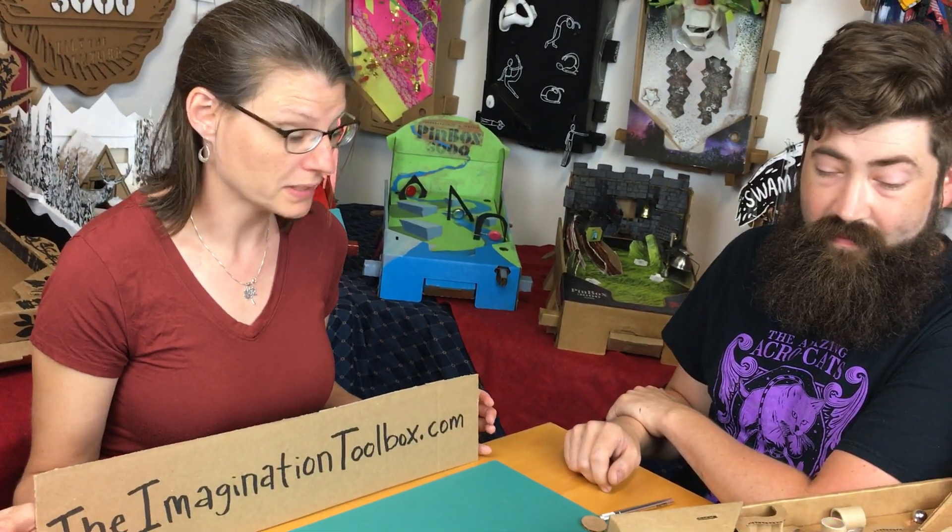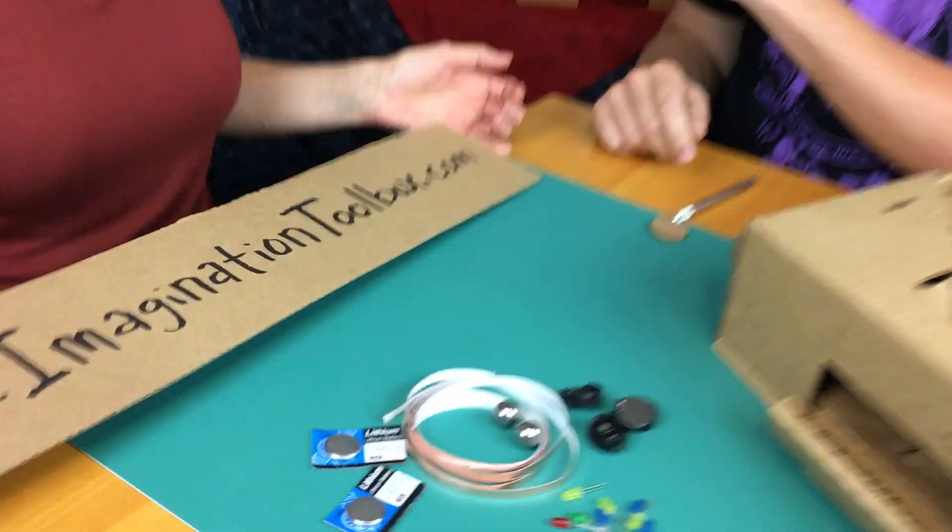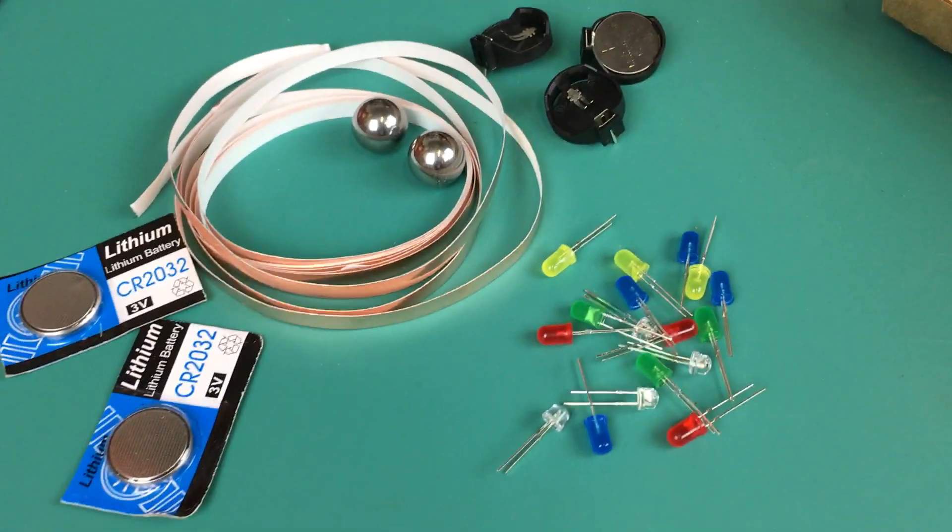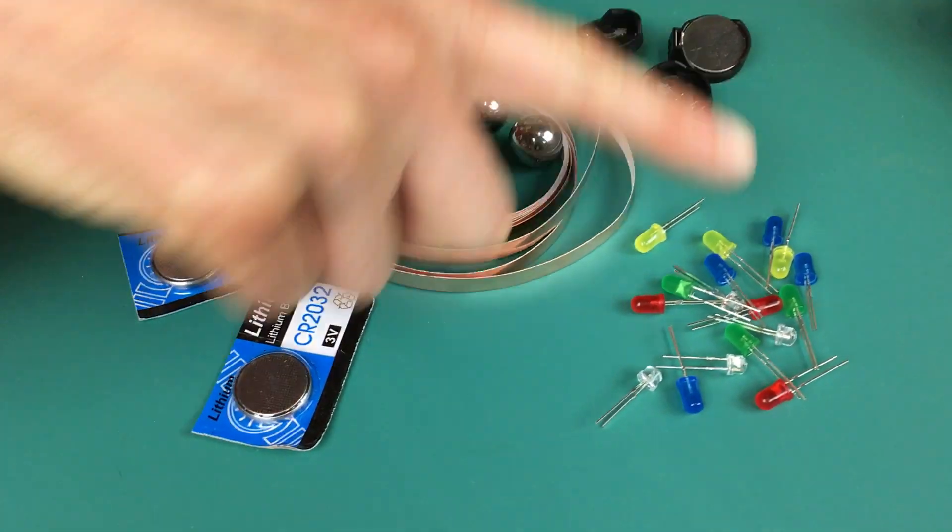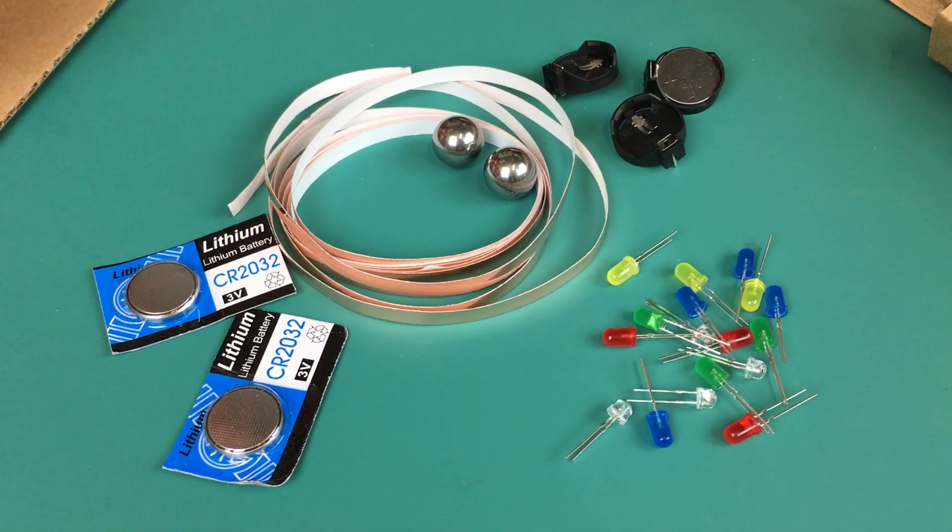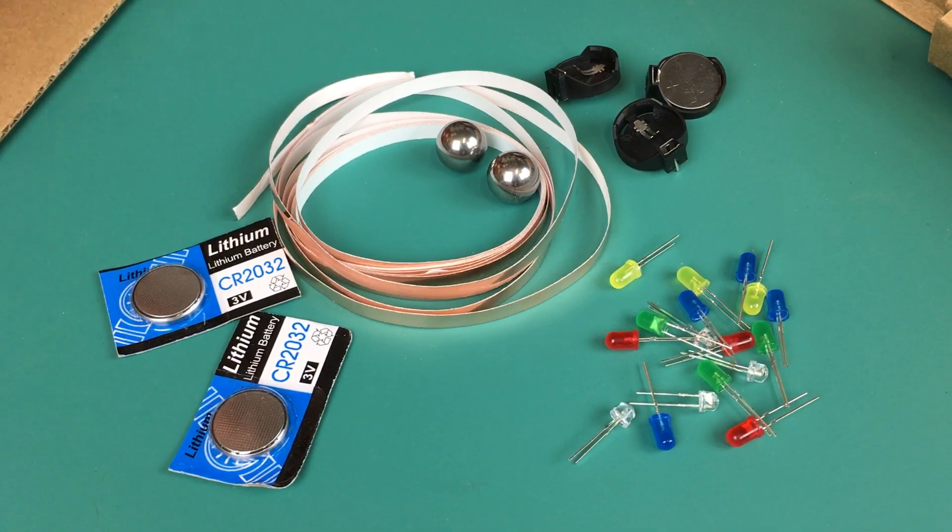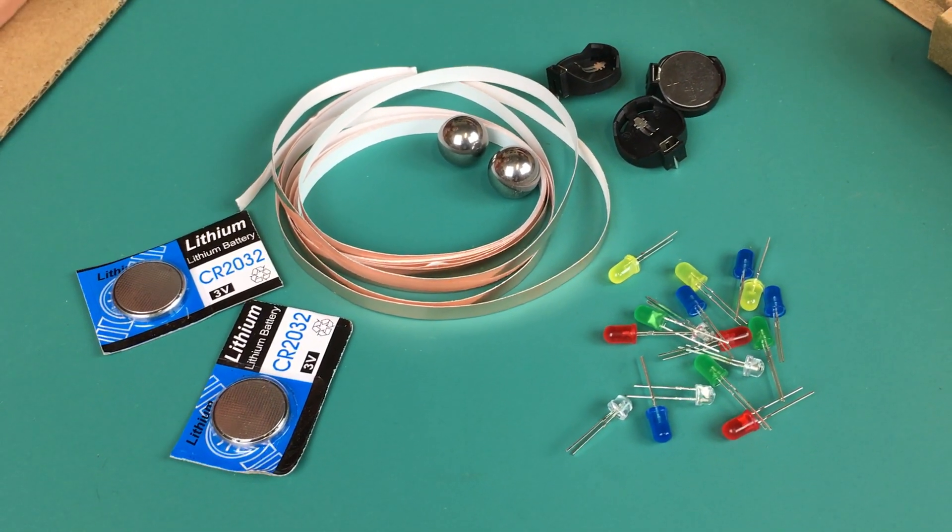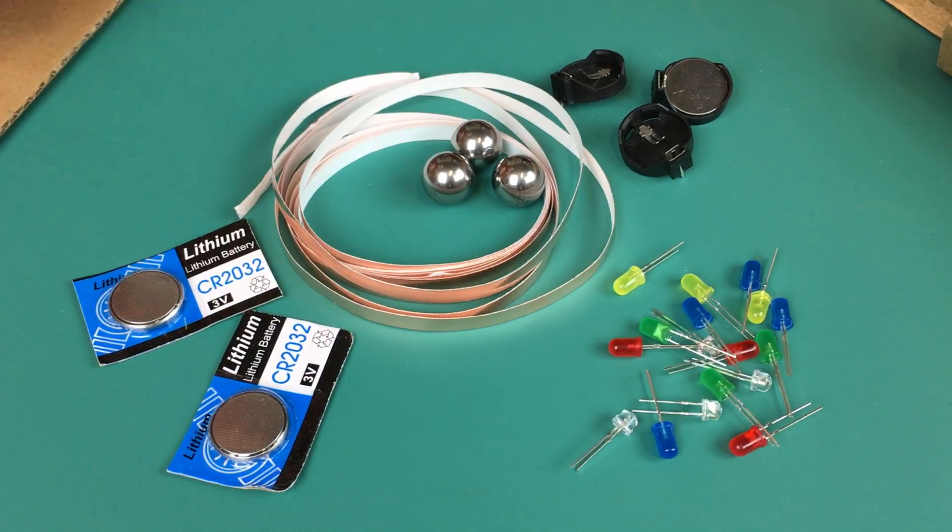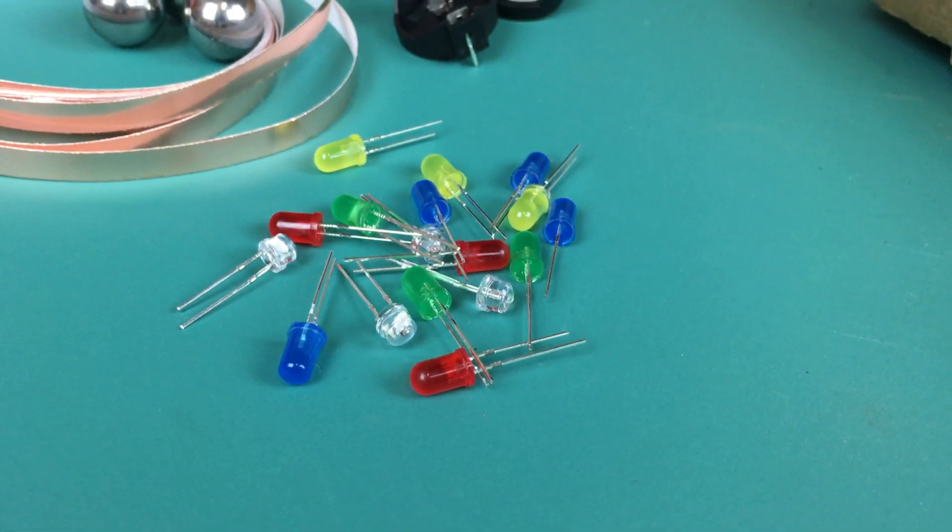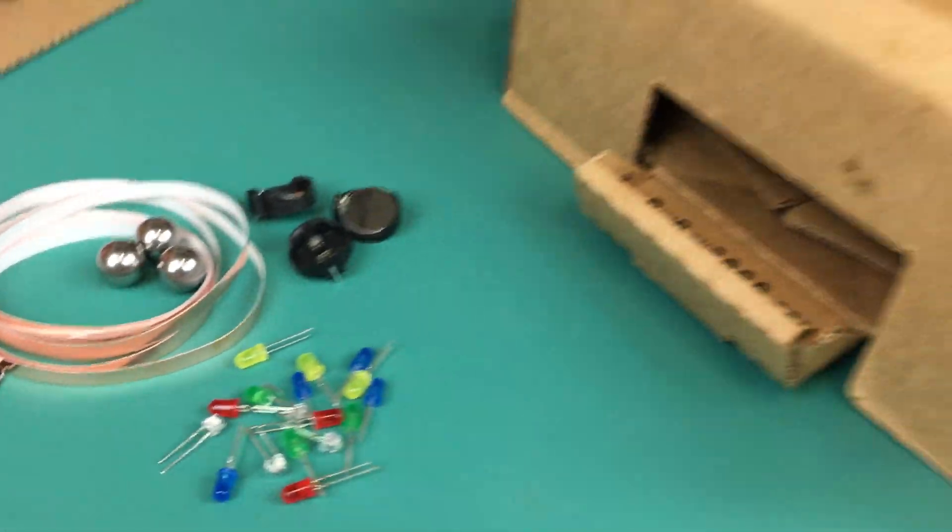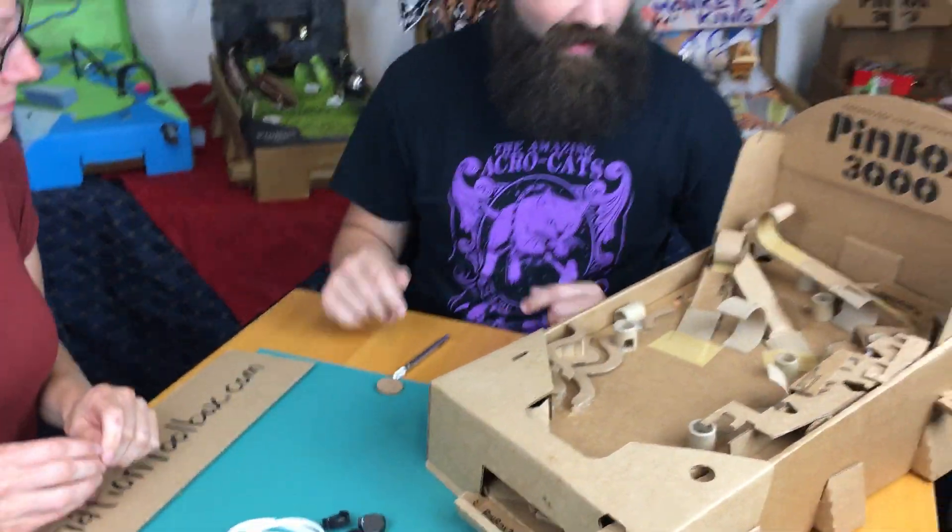You're going to show us how we can make a disco hut. Here you'll see the supplies that come in the tech kit: three batteries and battery holders, copper tape, three metal ball bearings, and a pile of LEDs. That's all you need.